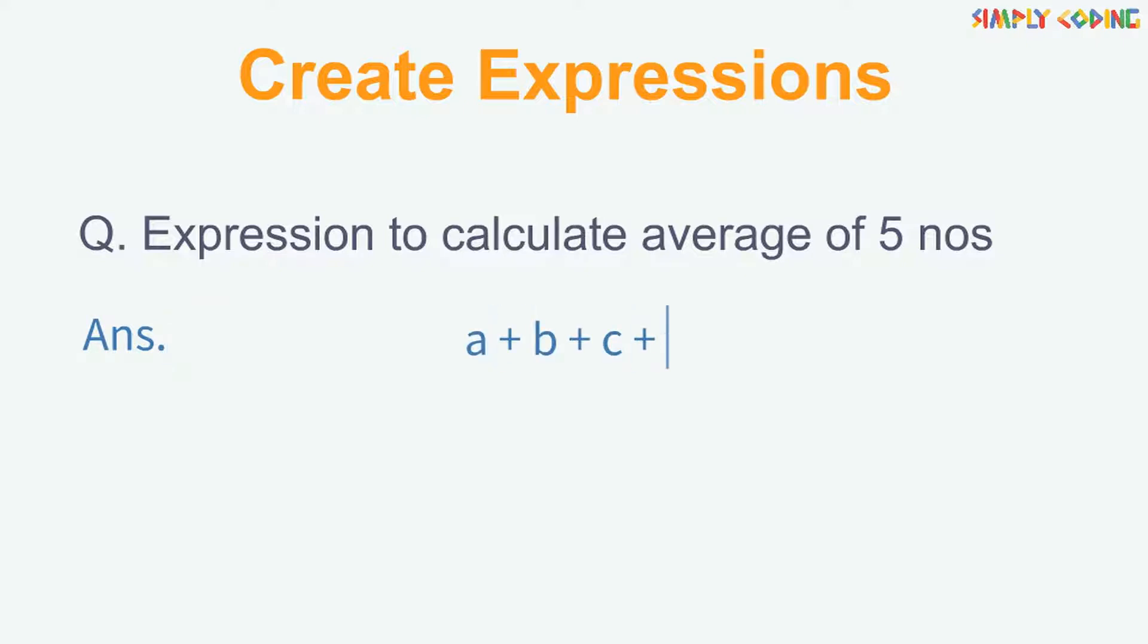Let's create some expressions with arithmetic operators. The first example is, how will we write an expression to calculate the average of five numbers. Here, we will do the sum of the five numbers using the plus operator and then divide by five to get the average. Do remember that since we want the addition to happen first, we need to put that in brackets.